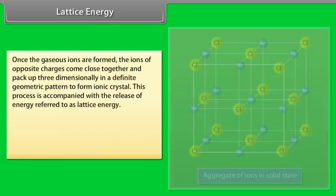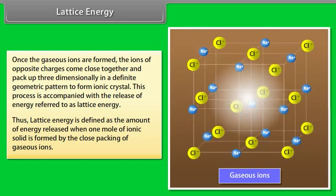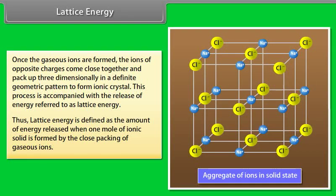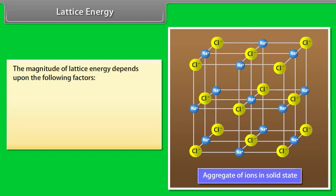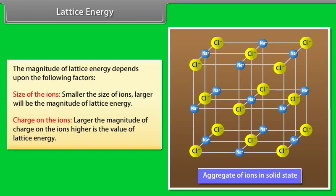Lattice energy: Once the gaseous ions are formed, ions of opposite charges pack three-dimensionally in a definite geometric pattern to form an ionic crystal, releasing energy called lattice energy. Lattice energy is the amount of energy released when one mole of ionic solid is formed by the close packing of gaseous ions. It depends on: size of the ions — smaller ions give greater interionic attraction and larger lattice energy; and charge on the ions — larger charge gives greater attractive force and higher lattice energy.